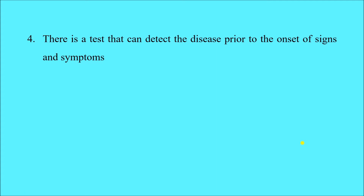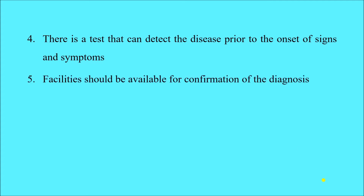There should be a test that can detect the disease prior to the onset of signs and symptoms. Of course, a screening test must be available that can detect the disease even before signs and symptoms appear. If no test can detect the disease in the asymptomatic stage, we obviously cannot screen for it.